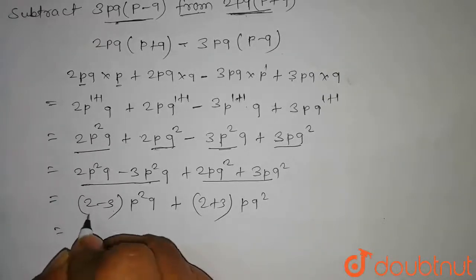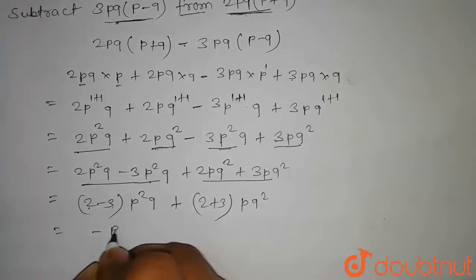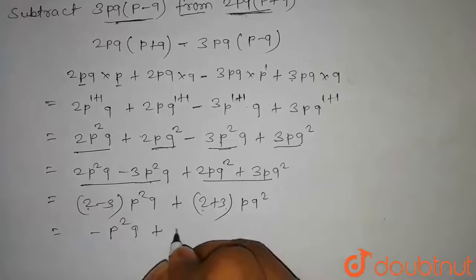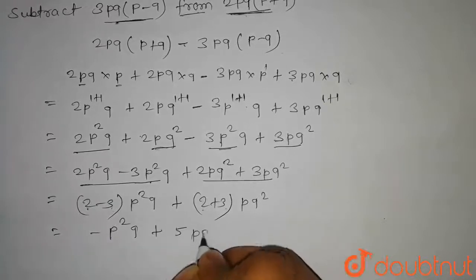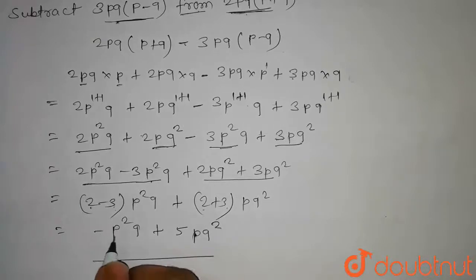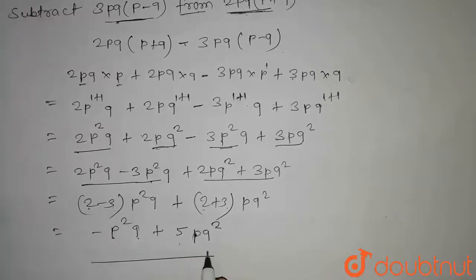On solving this, 2 minus 3 will be minus 1, so it will be minus p square into q plus 2 plus 3 will be 5 into pq square. So we get minus p square into q plus 5 pq square.